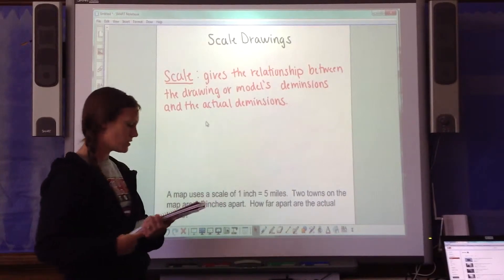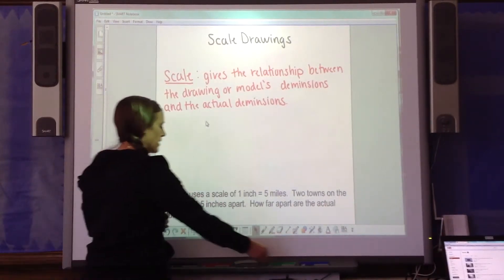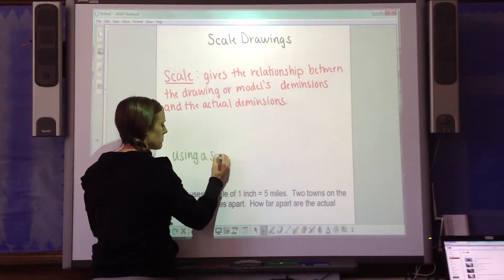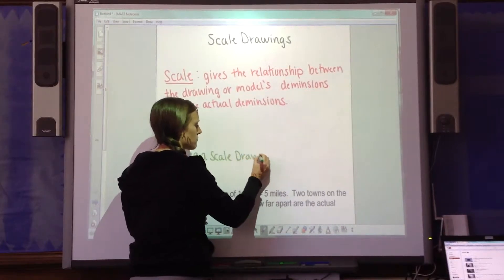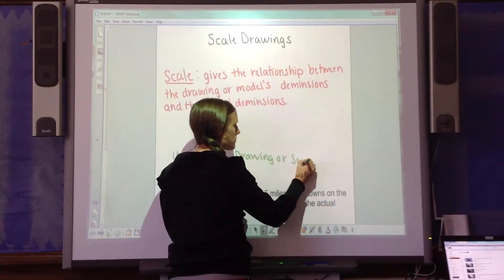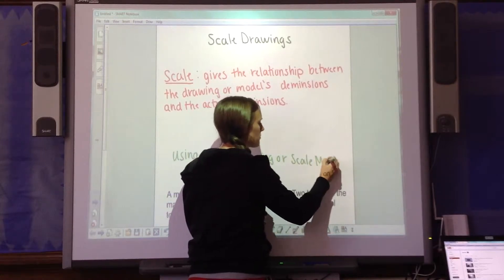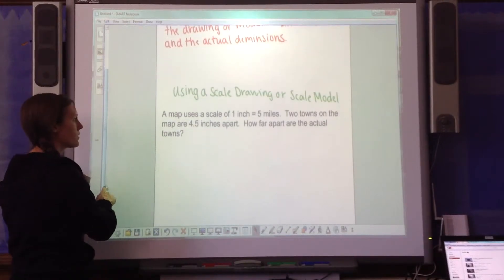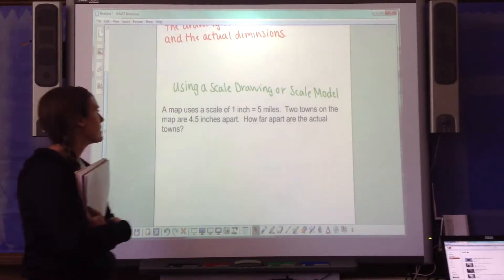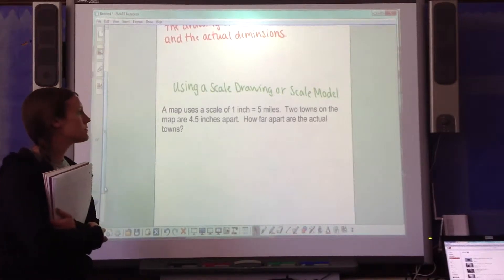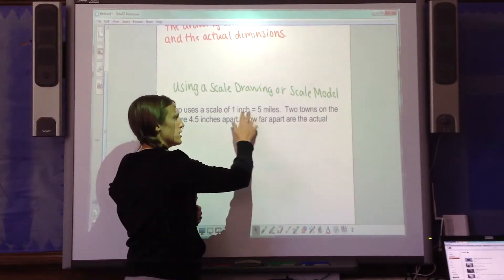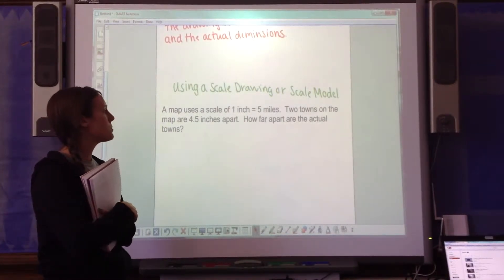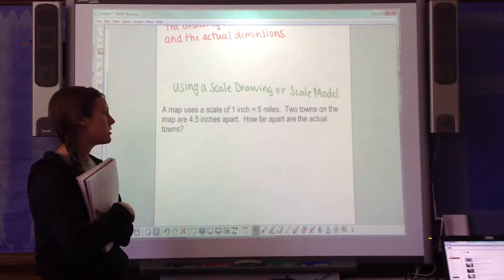This first part is called using a scale drawing or a scale model. A map uses a scale of one inch equals five miles. This is a ratio right here, one inch equals five miles. Two towns on the map are 4.5 inches apart. How far apart are the actual towns?